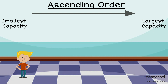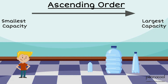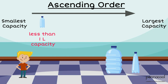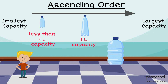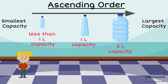Next, Adrian must arrange three bottles in ascending order with respect to their capacity. He must therefore start with the smallest bottle. The bottle that can hold the least amount of liquid is the first bottle, and its capacity is less than a litre. The bottle next in order is bottle number 3, with a capacity of 1 litre. The largest bottle comes last in ascending order as it can hold up to 3 litres of liquid.